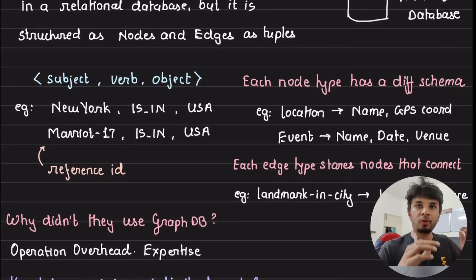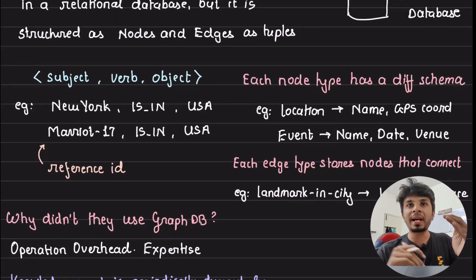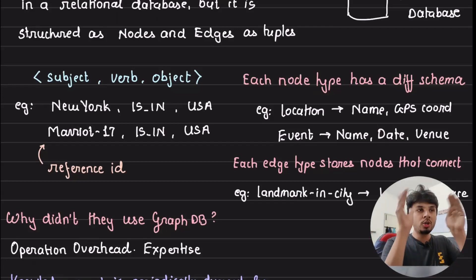So each node type in the graph has a different schema. For example, a location might have name and a GPS coordinate, while an event might have name, date, and venue. So there is a way in their own knowledge graph to specify that, hey, this is my node type, for this node type, this is the schema. So that when they're making an entry of this in the database, they can have that particular type of schema like they would be able to ingest that particular type of value.